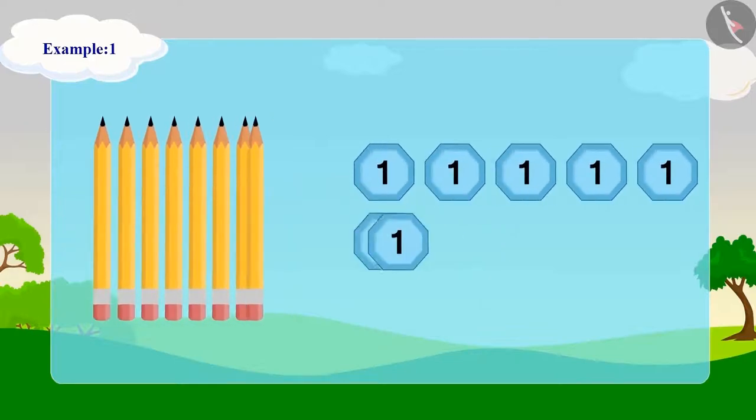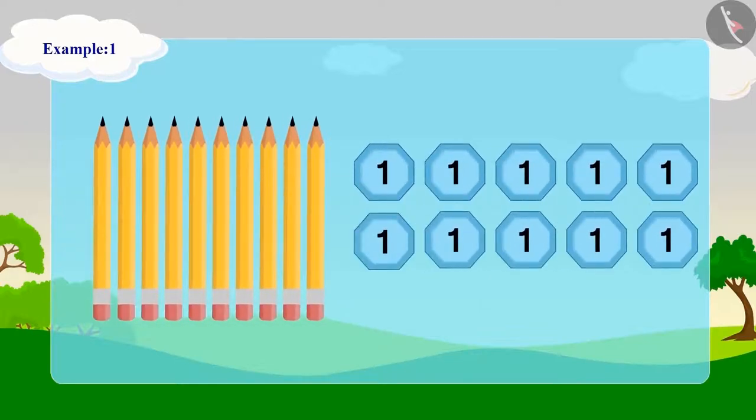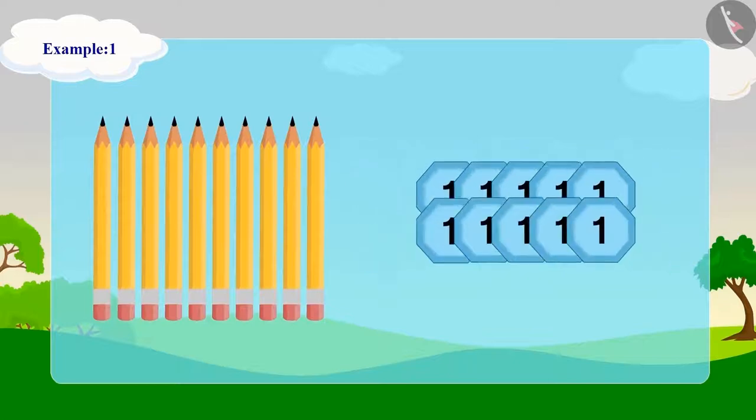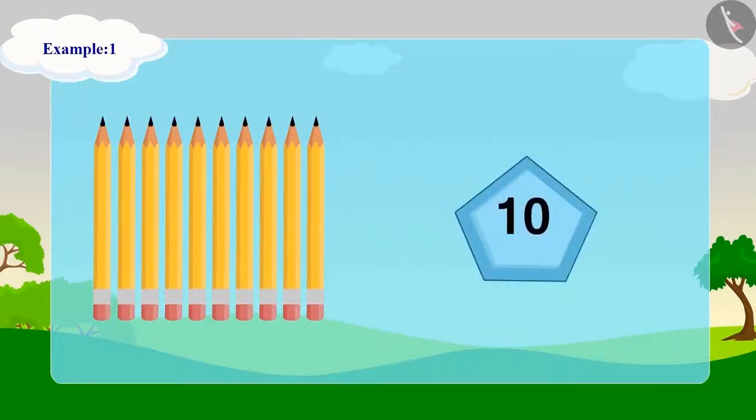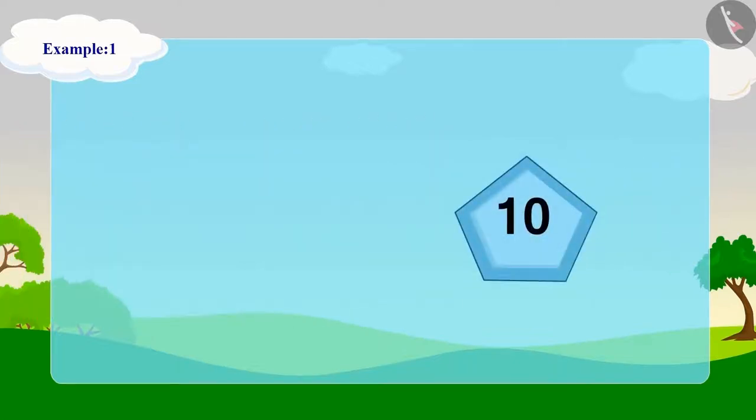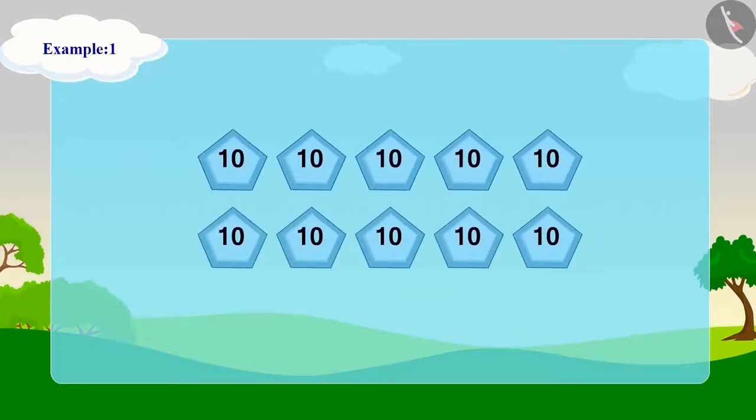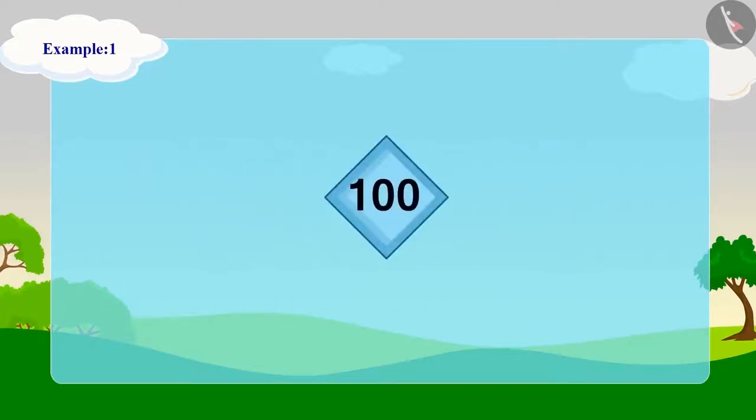When he has ten such tokens, he changes them with a token that has ten written on it. Now when he has ten such tokens, he replaces them with a token with 100 written on it.